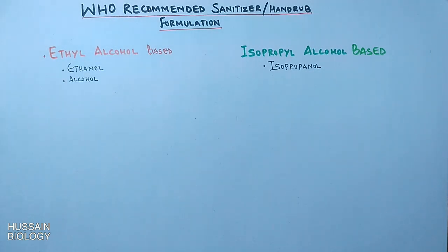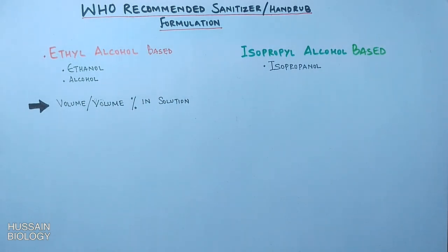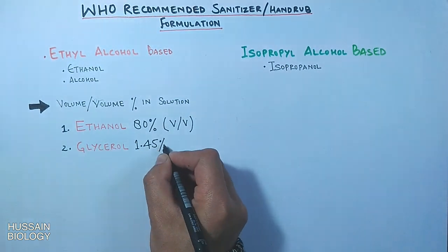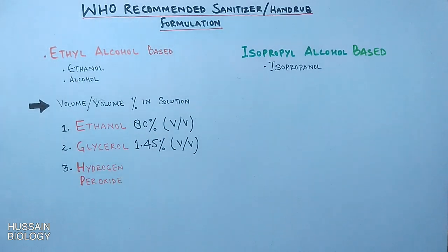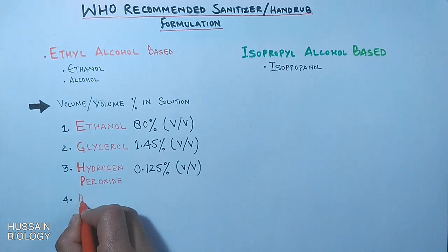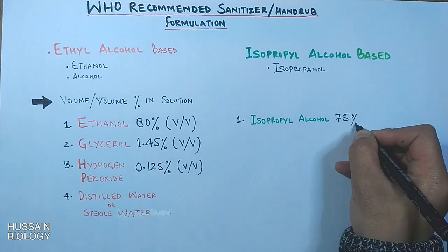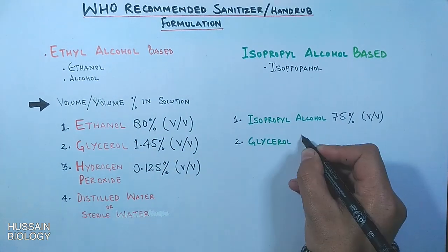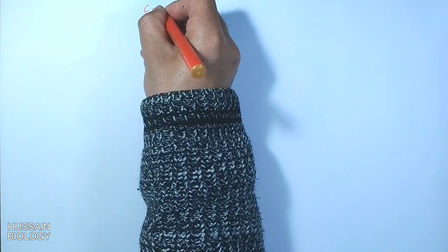Let's see the chemicals in each formulation with volume per volume percentages. For the ethyl alcohol-based formulation: ethanol is 80% in the solution, glycerol is 1.45%, and hydrogen peroxide is 0.125%. The fourth component is distilled or sterile water. For the isopropyl-based formulation, isopropyl alcohol is 75% in the solution, and the rest of the chemicals are the same, as shown in the table.